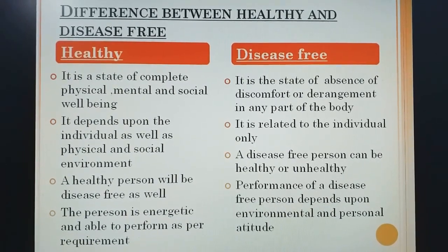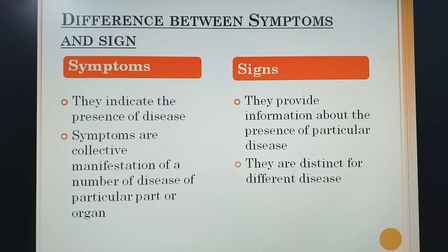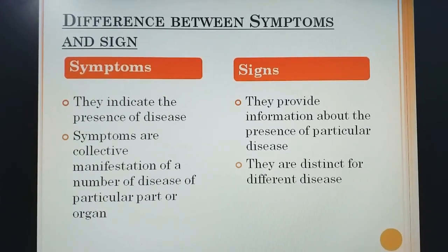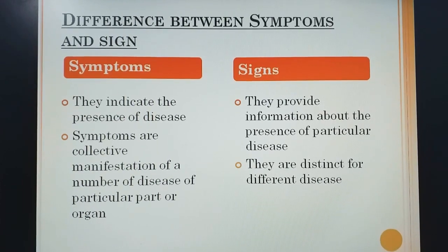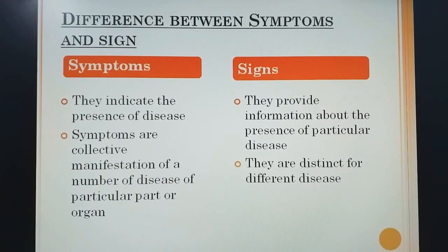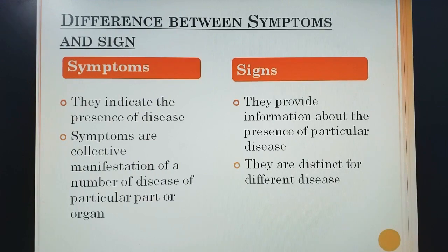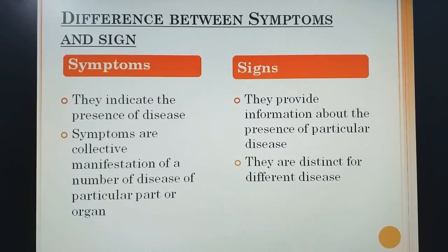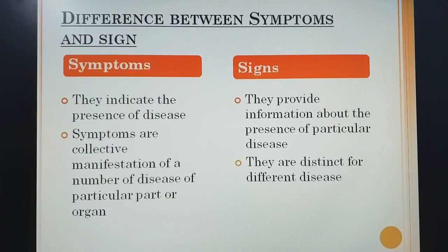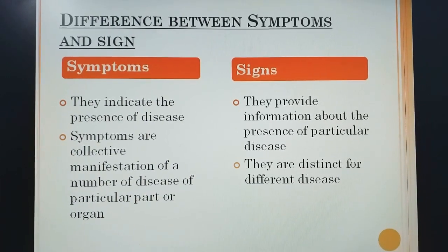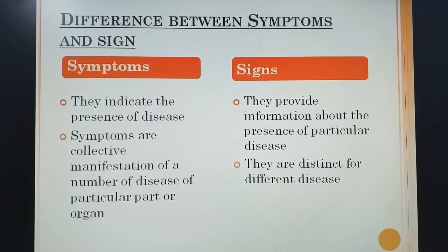Next is the difference between symptoms and signs. Symptoms indicate the presence of disease, whereas signs provide information about the presence of a particular disease in the body. Symptoms are the collective manifestation of a number of diseases of a particular part or organ, whereas signs are distinct for different diseases.